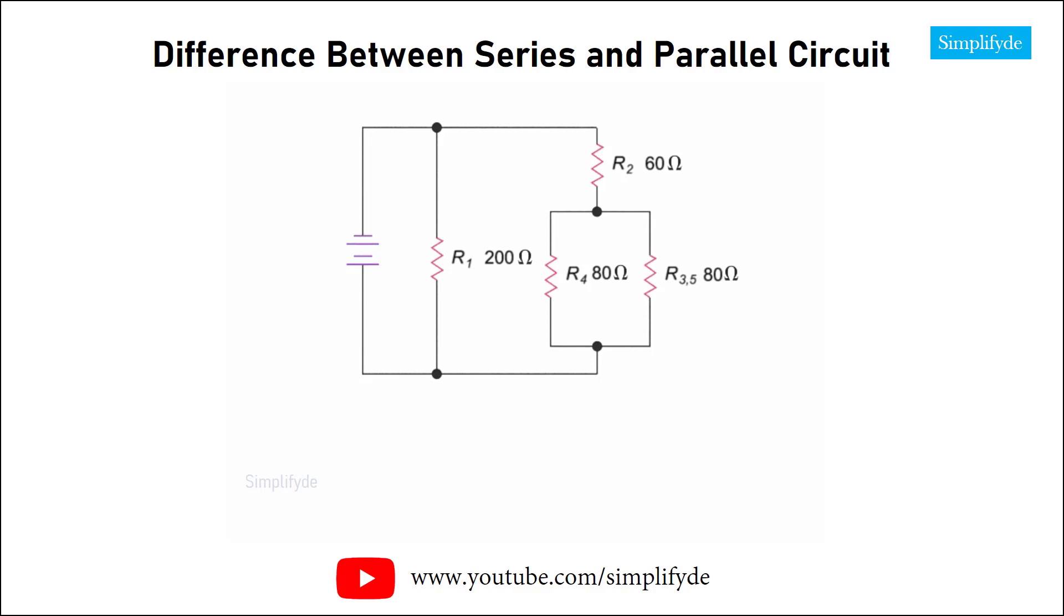Now, the R4 resistor and the equivalent resistance of the R3 and R5 resistors are in parallel. Their combined resistance can be calculated by dividing their product by their sum. Thus, using the product over sum equation, we have 80 times 80 equals 6400 divided by 80 plus 80, which is 160, giving 40 ohms.